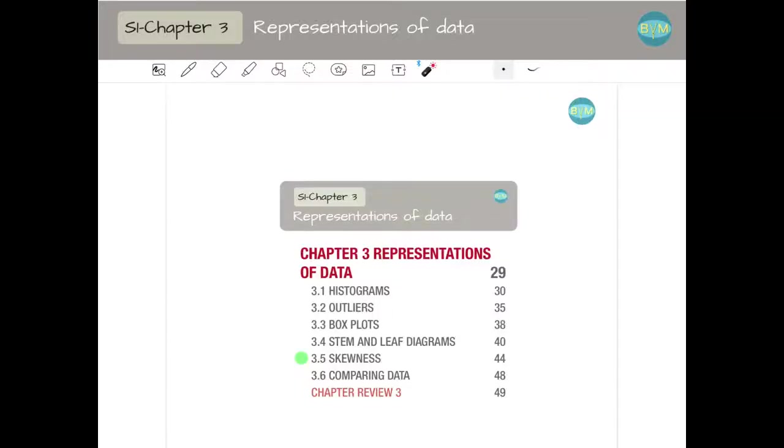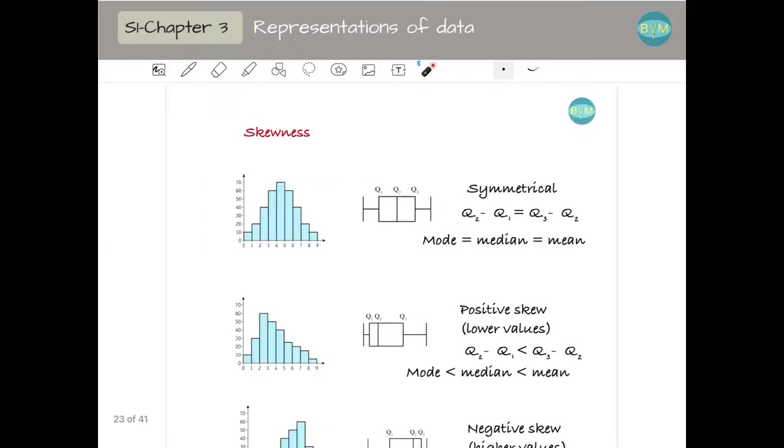In this section of the chapter we are going to talk about skewness of data. Skewness is a tendency of the data. We are going to see if our data is more or less central or has a tendency to lower or higher values than the mean or the central value.